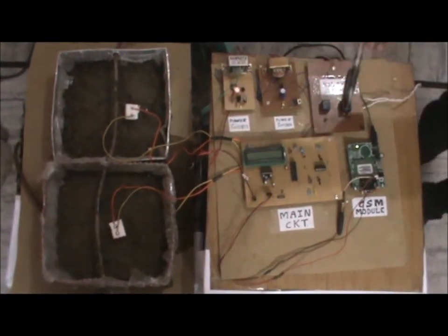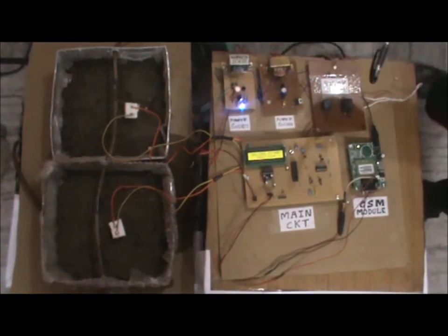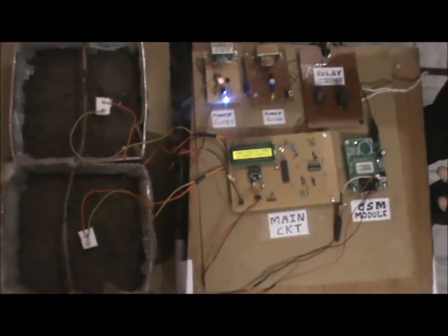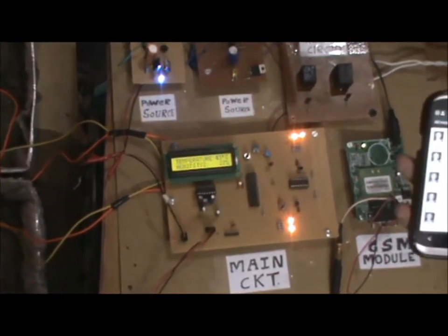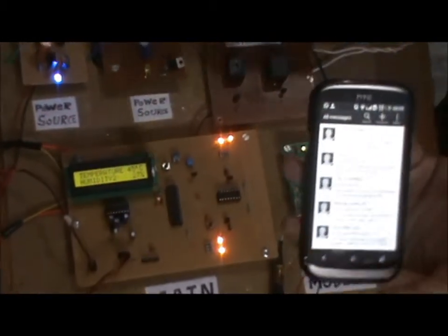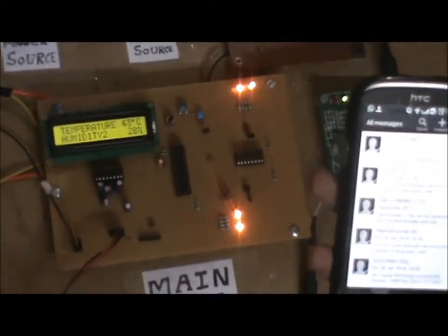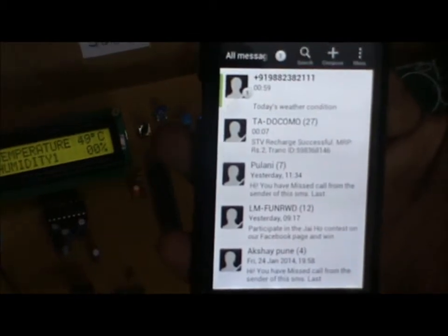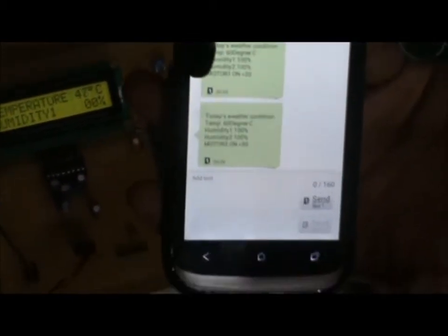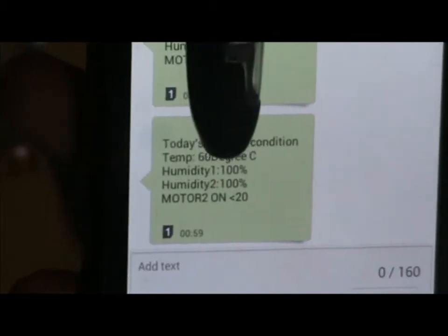As the switch circuit is switched on, the user will receive a message on his mobile. You can see, we received a message which displays the temperature and humidity of both the farms.